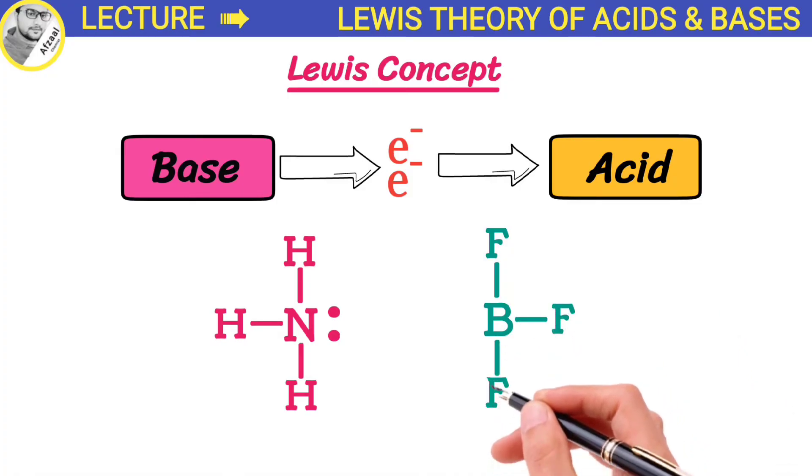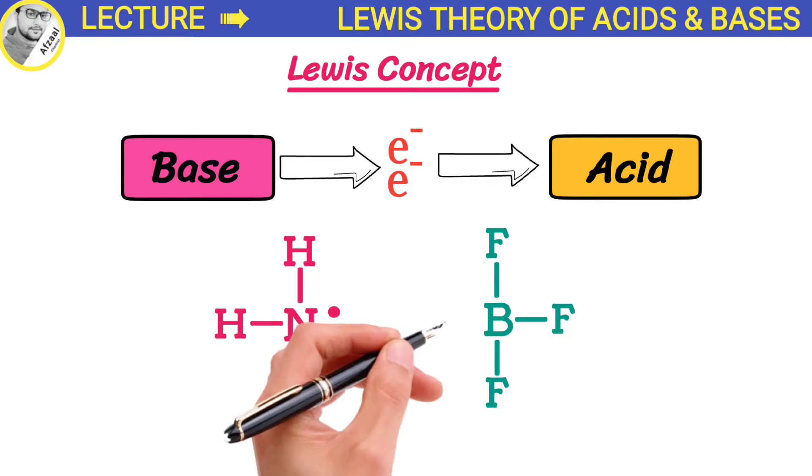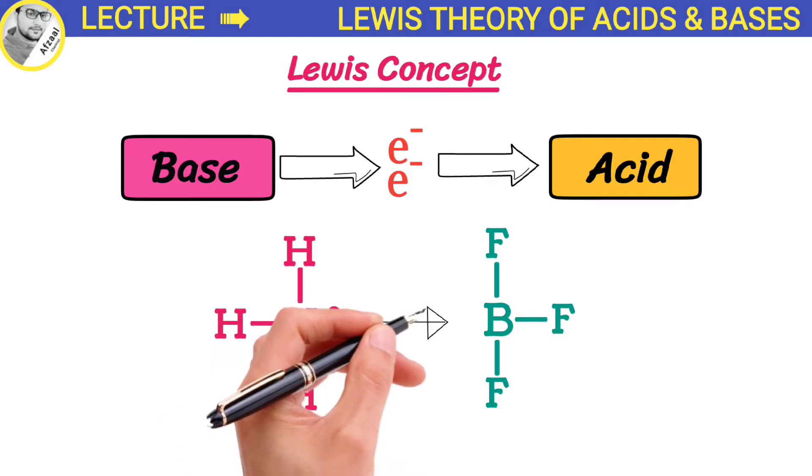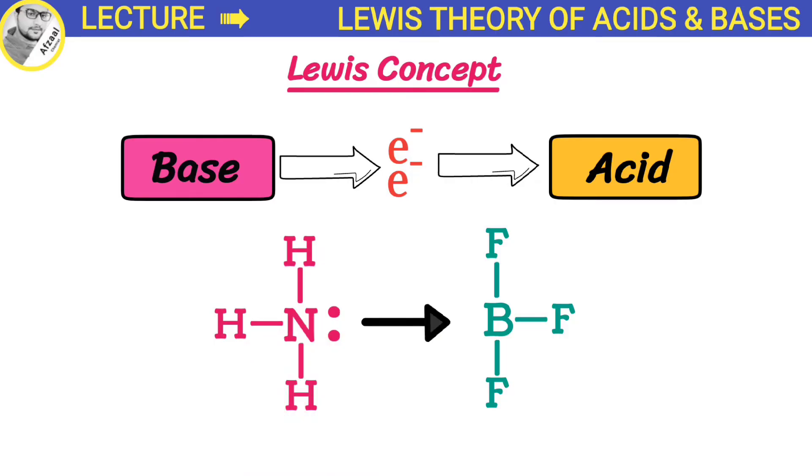When they come together, ammonia donates its lone pair of electrons to boron trifluoride. This forms a coordinate covalent bond between them. The ammonia acts as a base because it donated its electrons, and boron trifluoride acts as an acid because it accepted those electrons.